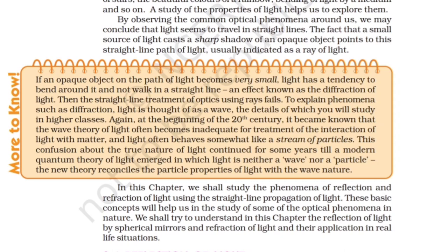More to know: If an opaque object on the path of light becomes very small, light has a tendency to bend around it and not walk in a straight line — an effect known as the diffraction of light. Then the straight-line treatment of optics using rays fails. To explain phenomena such as diffraction, light is thought of as a wave, the details of which you will study in higher classes.